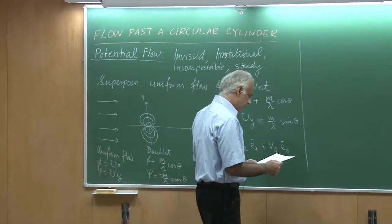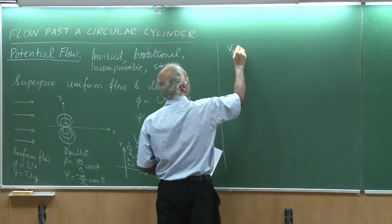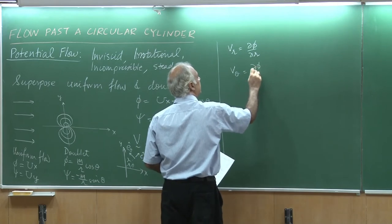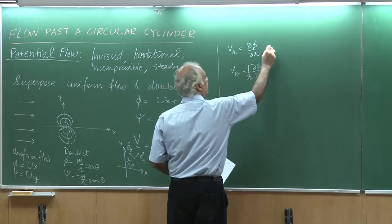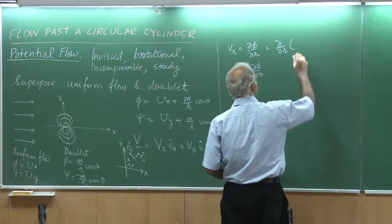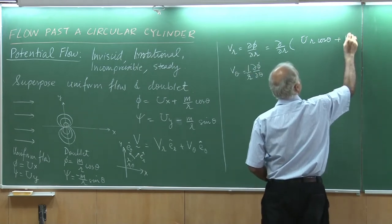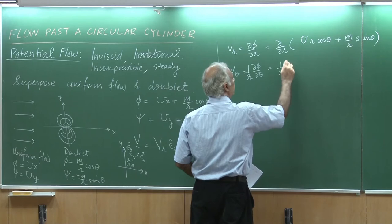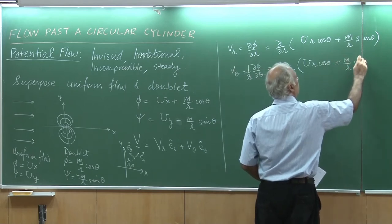I will estimate phi and then get the velocity components from that. v_r is given as del phi by del r, and v_theta includes a factor of 1 over r. So taking the derivative with respect to r of the phi — which is u times r cosine theta plus m divided by r times cosine theta — gives v_r. And v_theta is given as 1 over r times del by del theta of u times r cosine theta plus m divided by r times sine theta.